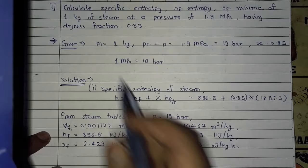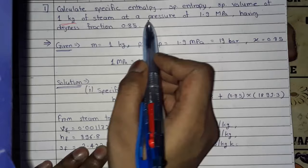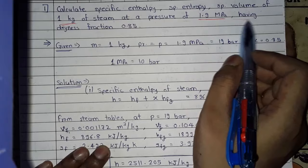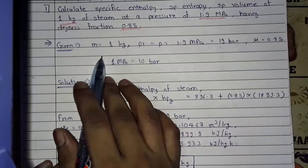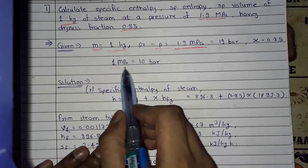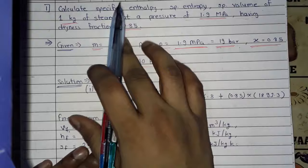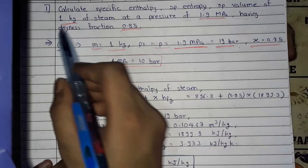Now let's see the first problem. Calculate specific enthalpy, specific entropy, and specific volume of 1 kg of steam at a pressure of 1.9 MPa having dryness fraction 0.85. Given: mass = 1 kg, pressure = 1.9 MPa = 19 bar, and x = 0.85. In this problem we will find the specific properties, that is, on a unit mass basis.